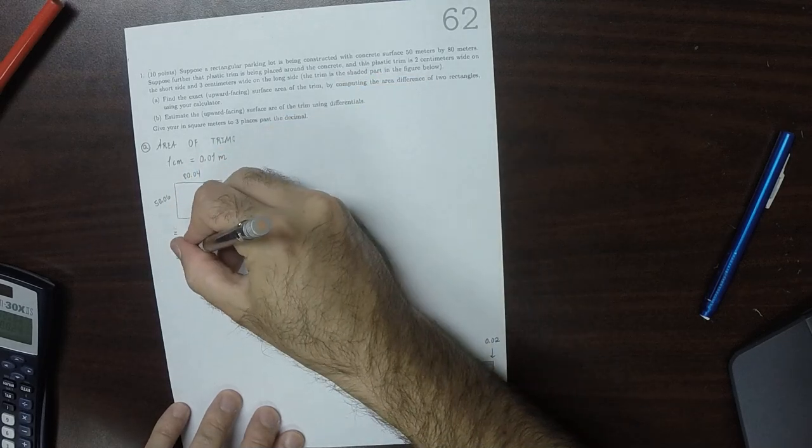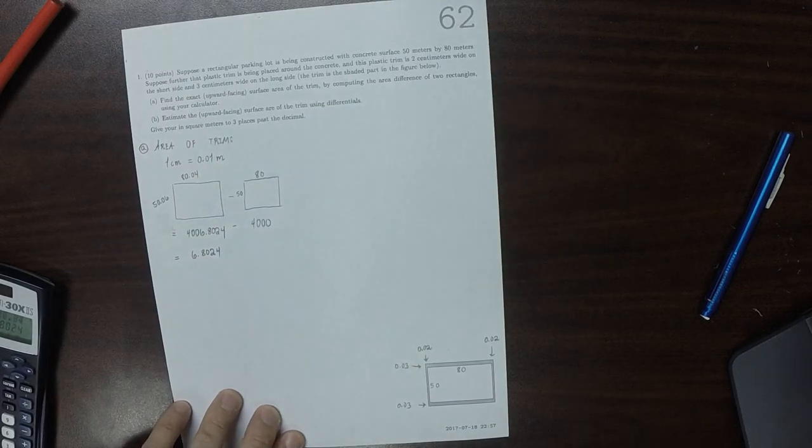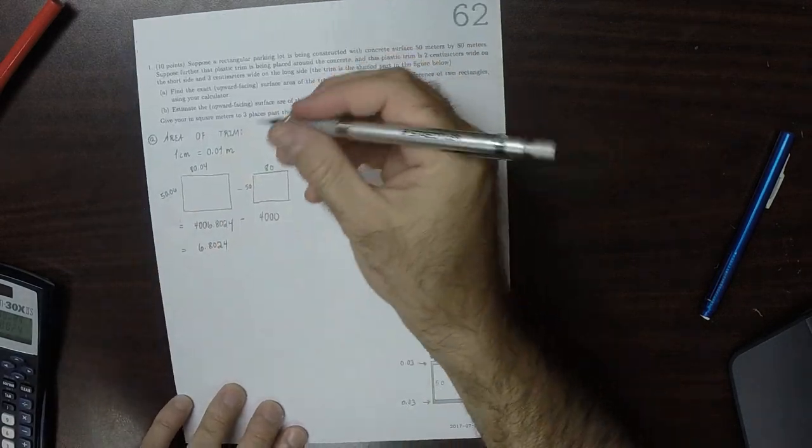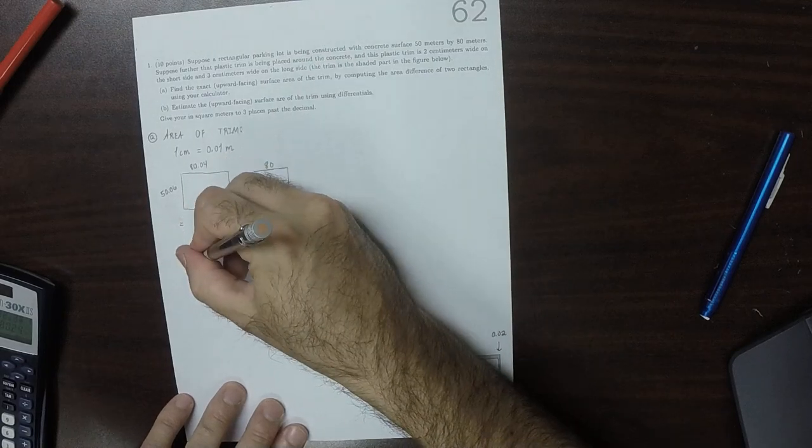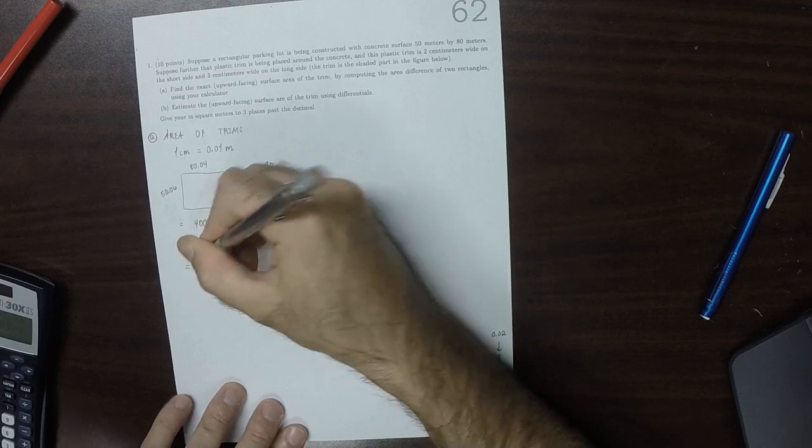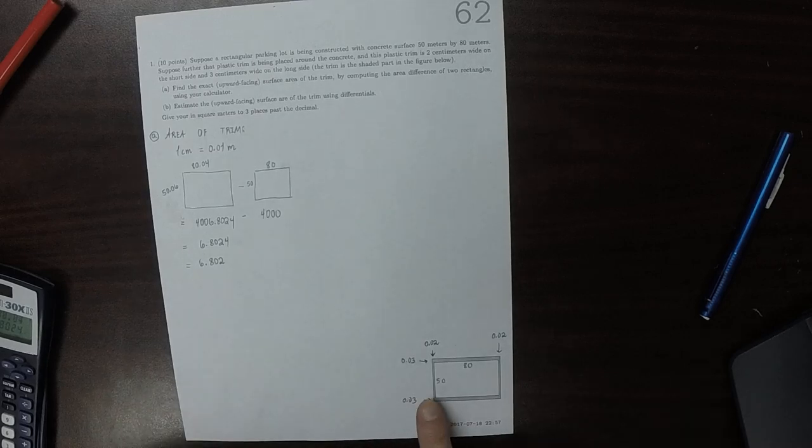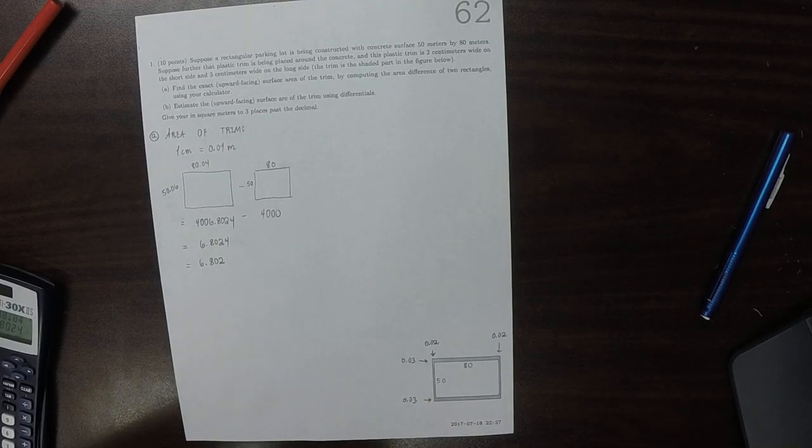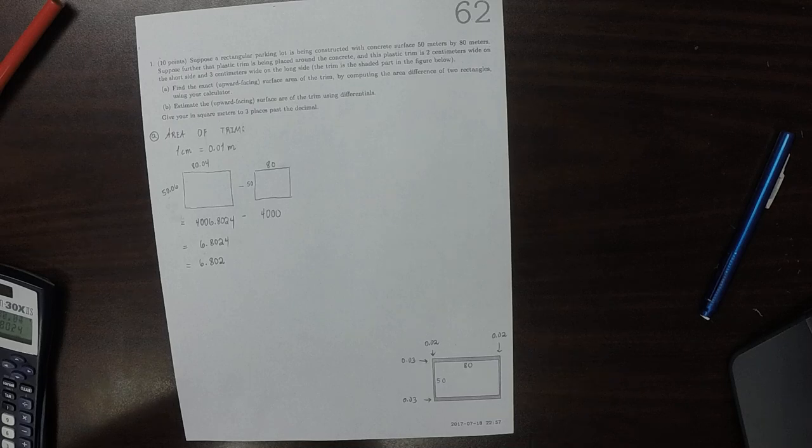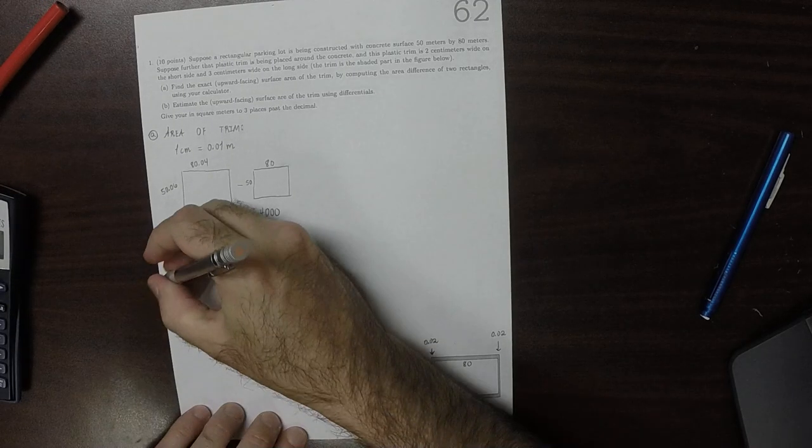So that's equal to 6.8024, and then to three places past the decimal that is 6.802. So that's saying that by adding this trim that adds another 6.8 square meters to the surface.